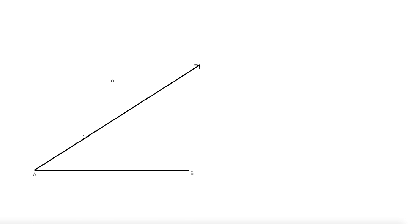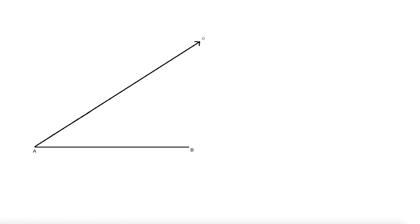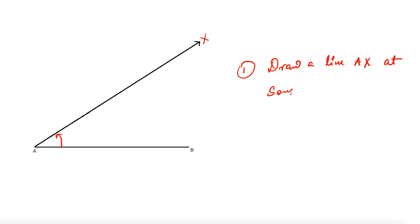Let's say I have line segment AB and I have to divide it in ratio 3:4. The first step is: draw a line AX such that it makes some acute angle with AB. It can be of any measure, but it should be acute so that our division is proper and easy.